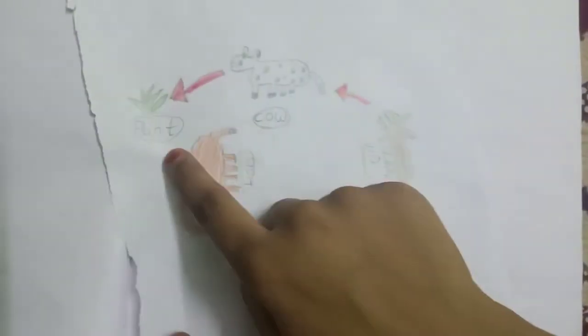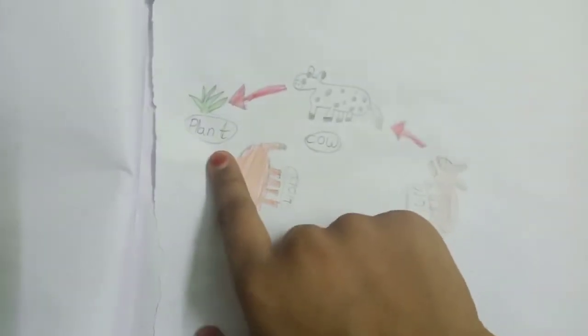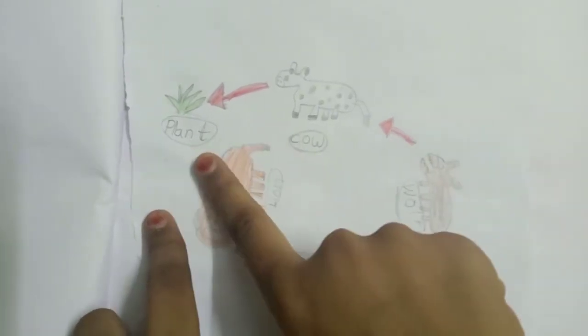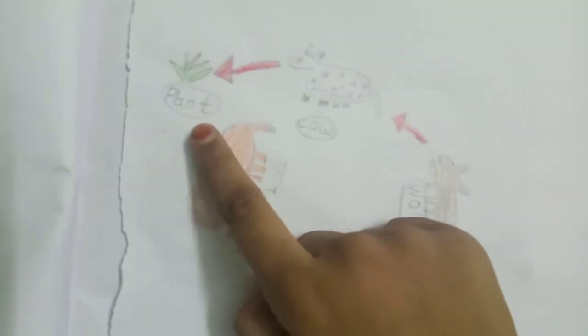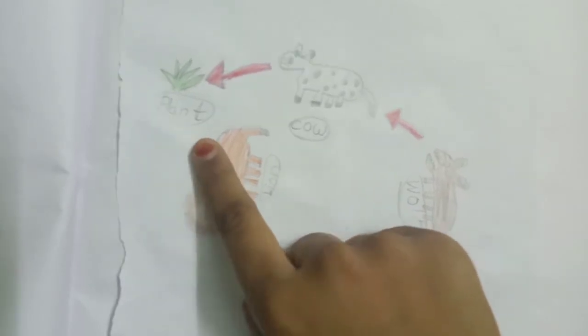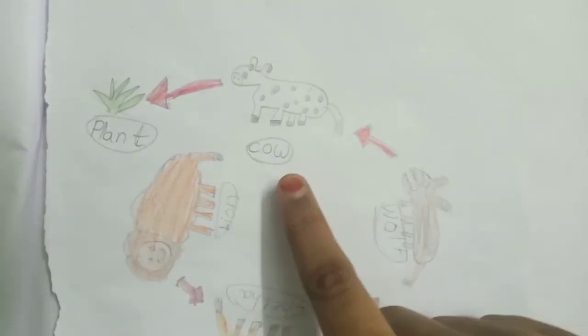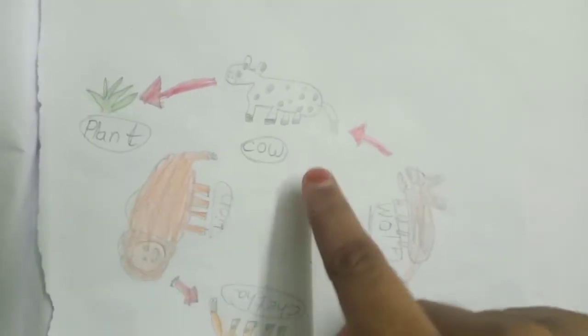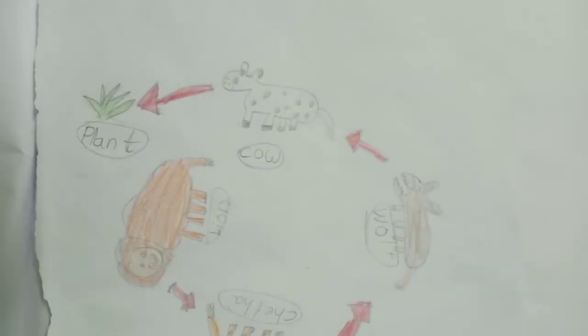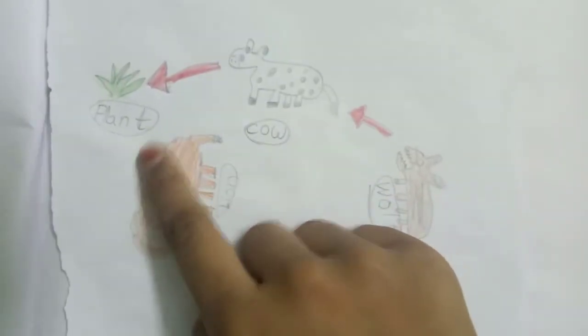Everyone knows any food chain starts with plants. So let's take a plant. A cow eats a plant. So if you can see here, a plant is getting eaten by a cow and this cow is getting eaten by a wolf. The plant is eaten by a cow, or we can also say that a cow is eating plants.